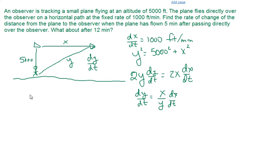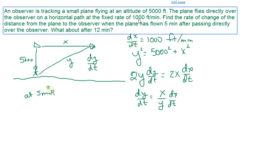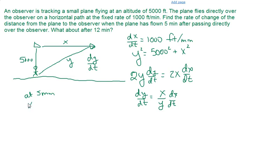After 5 minutes, x is going to be 5,000 feet because we've traveled for 5 minutes at 1,000 feet per minute. So x is 5,000 and we have to determine y. So to find y, we use the Pythagorean theorem. So y is going to be the square root of 5,000² plus our horizontal distance. And that comes out to be 7,071 feet approximately.